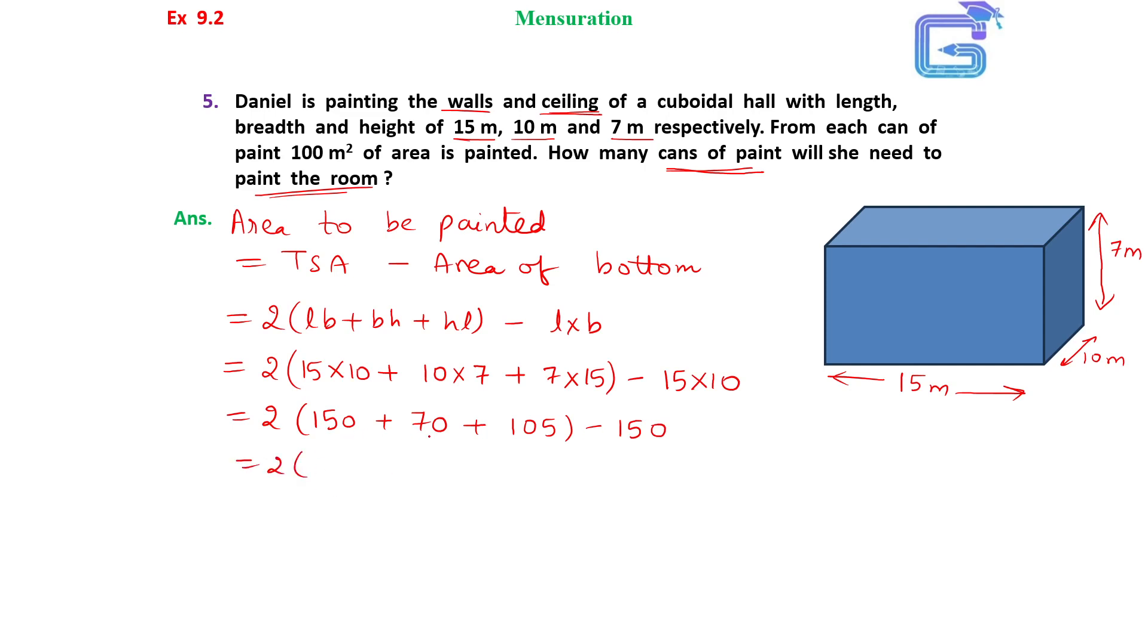150 plus 70 plus 105, we get 325 minus 150. Now, 2 into 325 is 650, 650 minus 150, so this gives us 500 meter square. That is how much we have to paint.